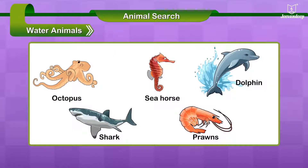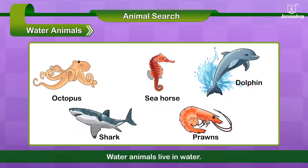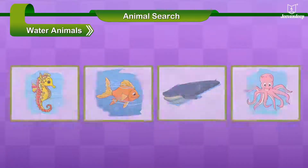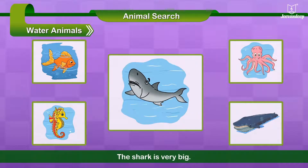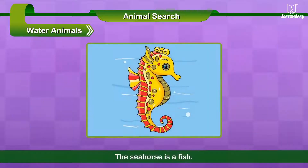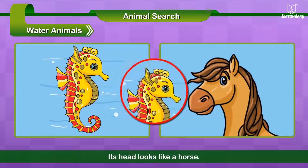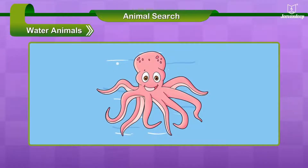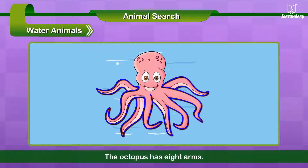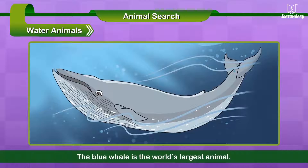Water animals live in water. Some fishes, like the shark, are very big. The sea horse is a fish — its head looks like a horse. The octopus is a water animal with eight arms. The blue whale is the world's largest animal.